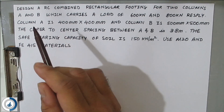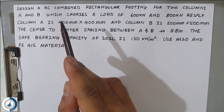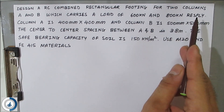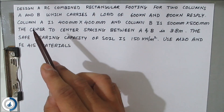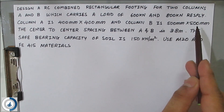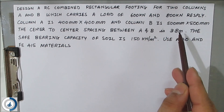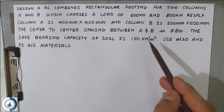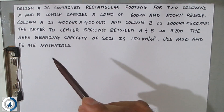Let's start with today's problem: Design an RC combined rectangular footing for two columns A and B. Column A carries 600 kN and column B carries 800 kN. Column A is 400 mm × 400 mm and column B is 500 mm × 500 mm — so column B is bigger. The center-to-center spacing between A and B is 3.8 meters. The safe bearing capacity (SBC) of the soil is 150 kN/m², using M20 concrete and Fe415 steel.